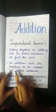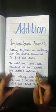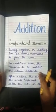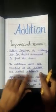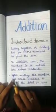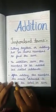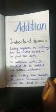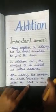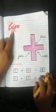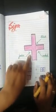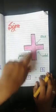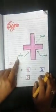In addition, the numbers to be added are called addends. After adding the numbers, the result obtained is called the total or sum. This is the addition sign — it's also called plus, add, and join.